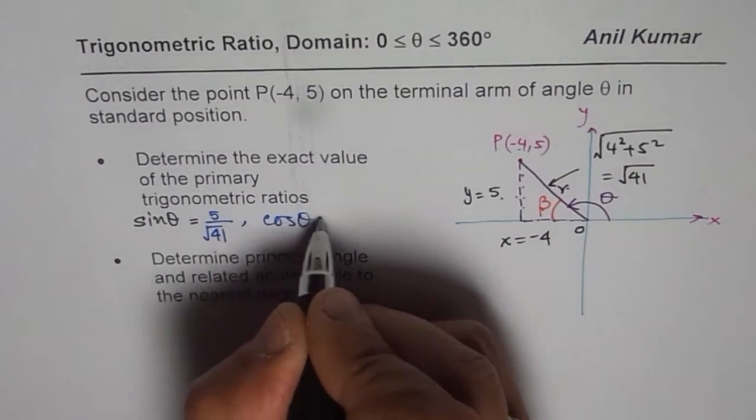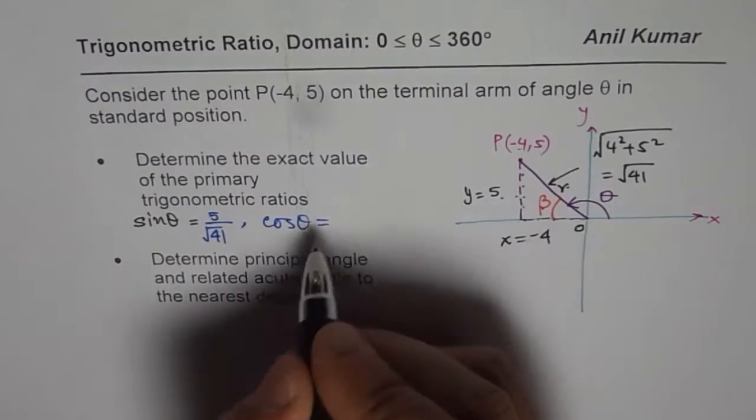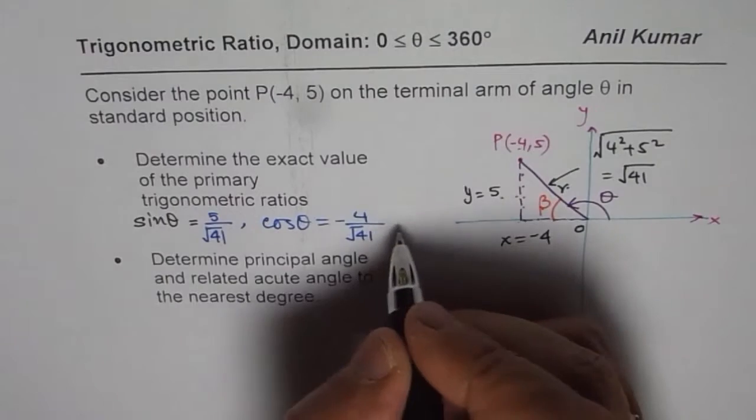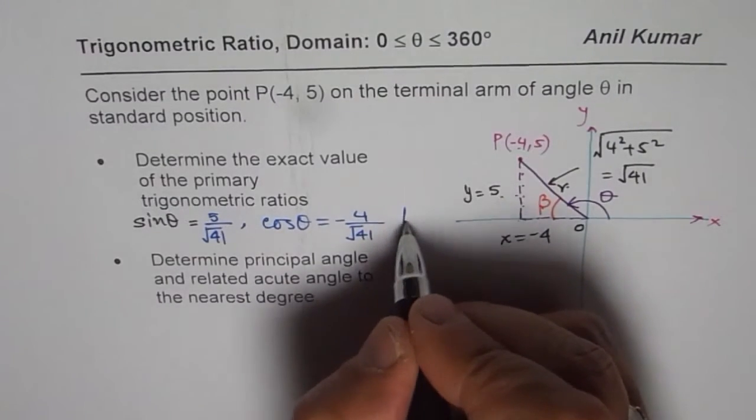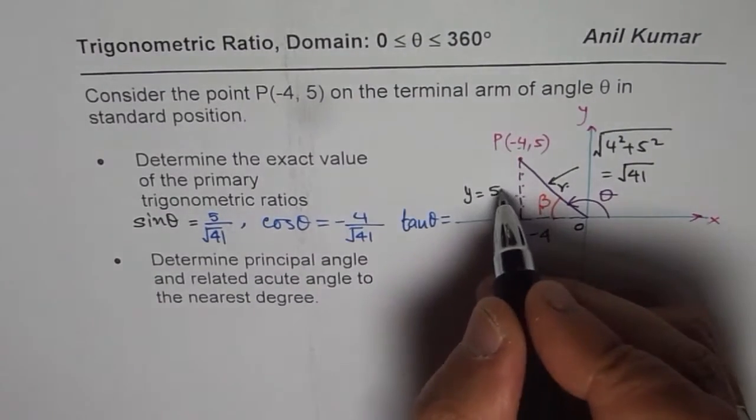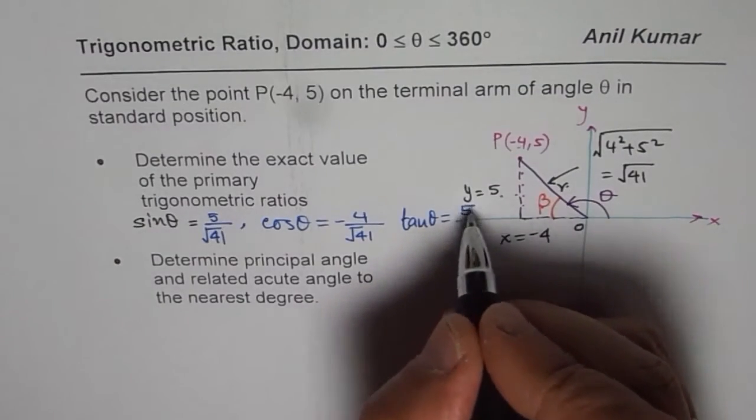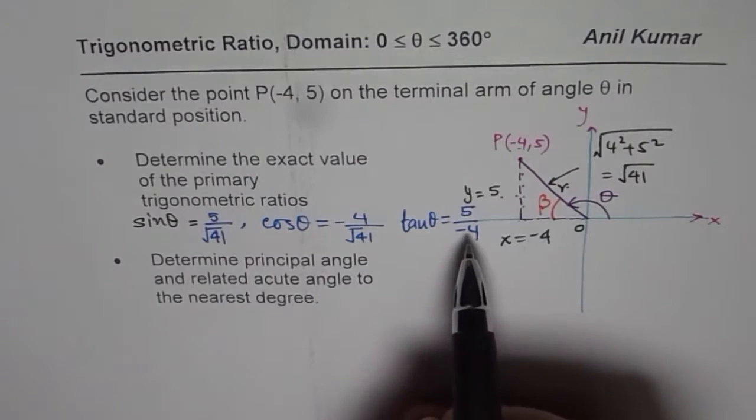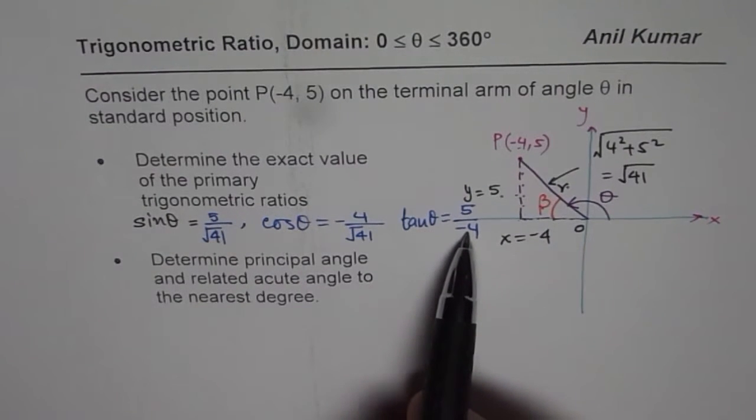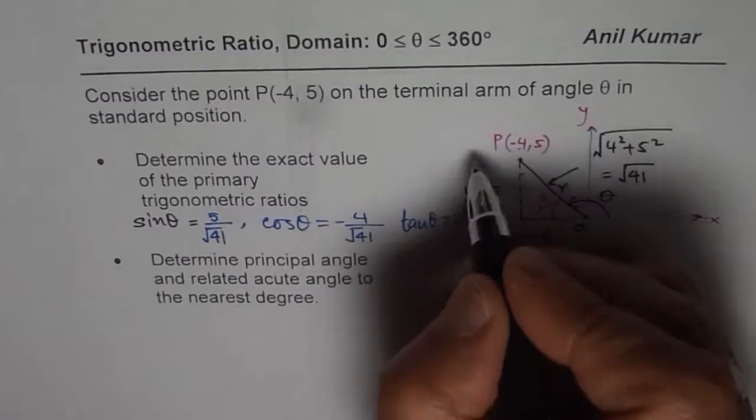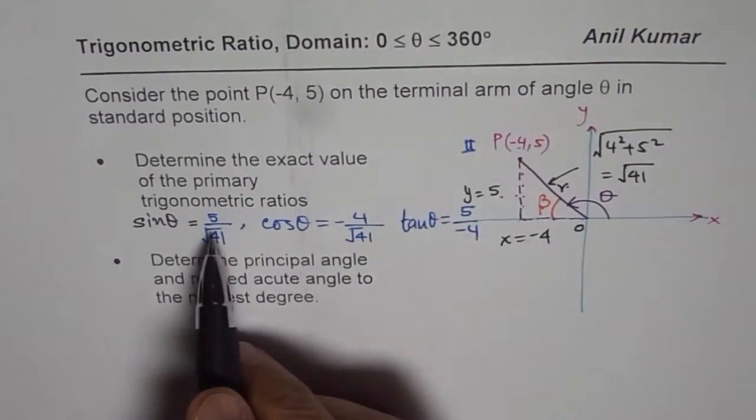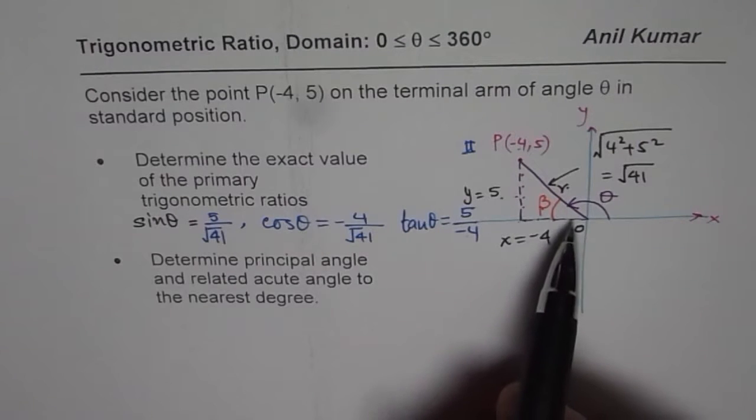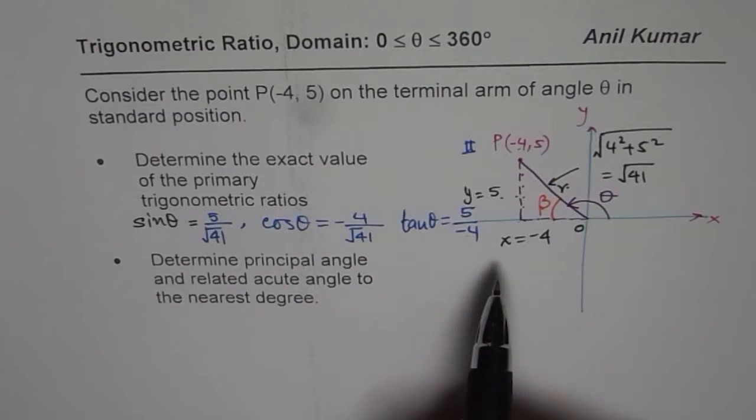For cos theta, we can write cos theta is equal to adjacent side, which is minus 4 over square root of 41. And tan theta is opposite side, which is 5, over minus 4. With the result, you can see cosine and tangent are negative values as expected. Since we are working in quadrant 2, sine is positive. We can find primary trigonometric ratios by finding the arm length of the terminal arm.